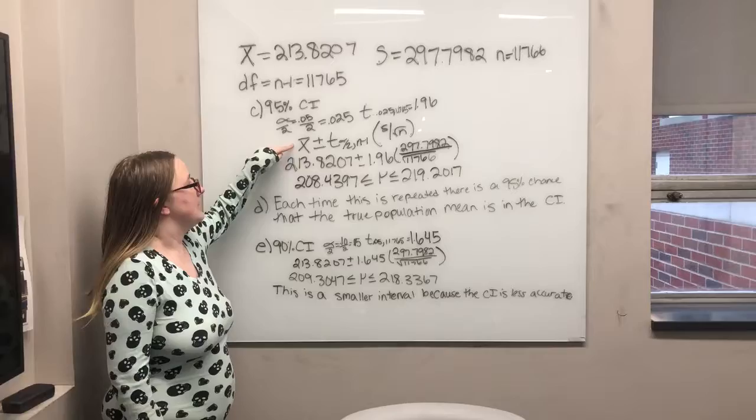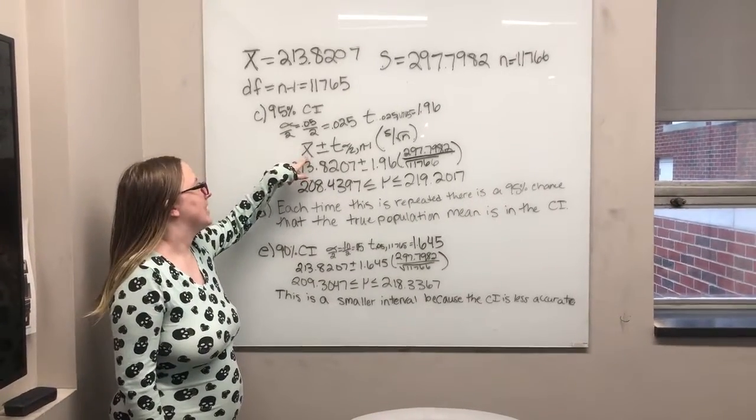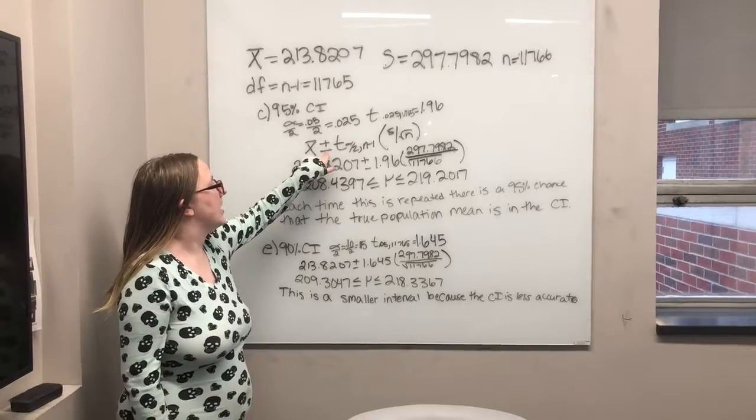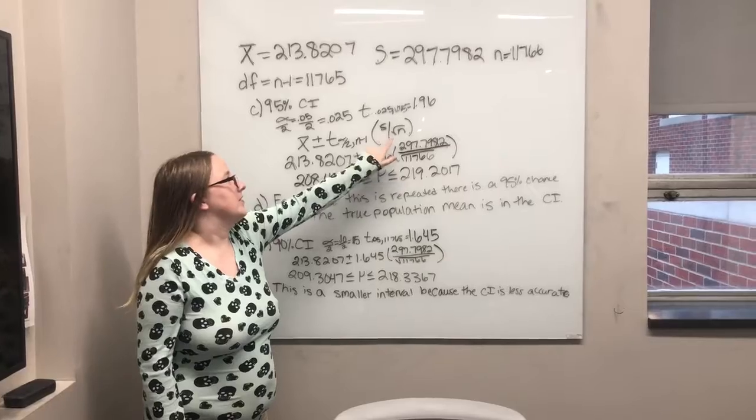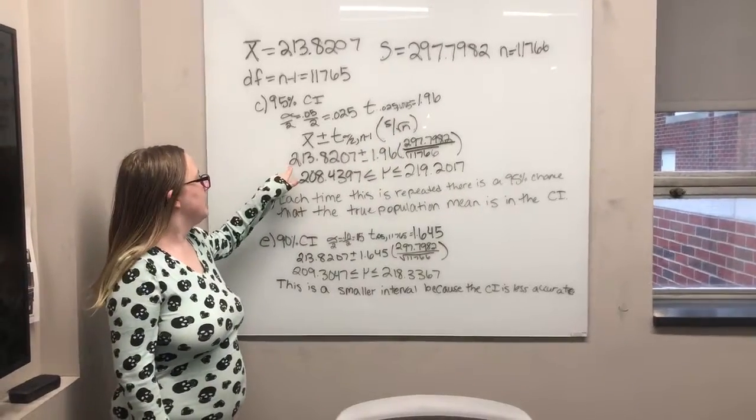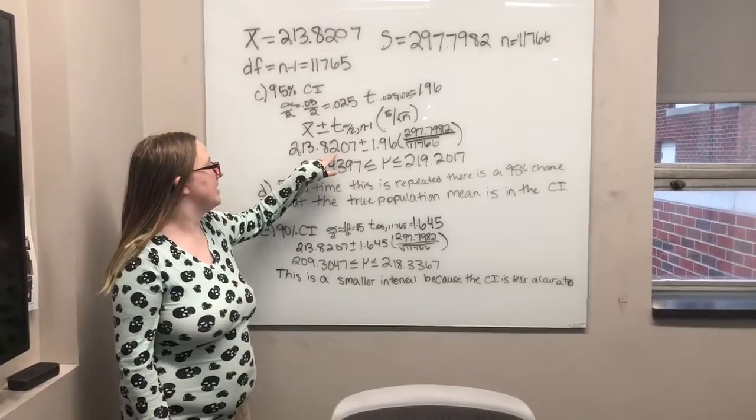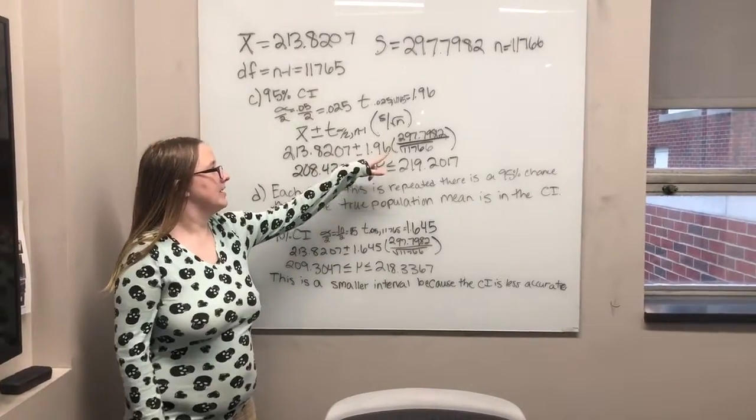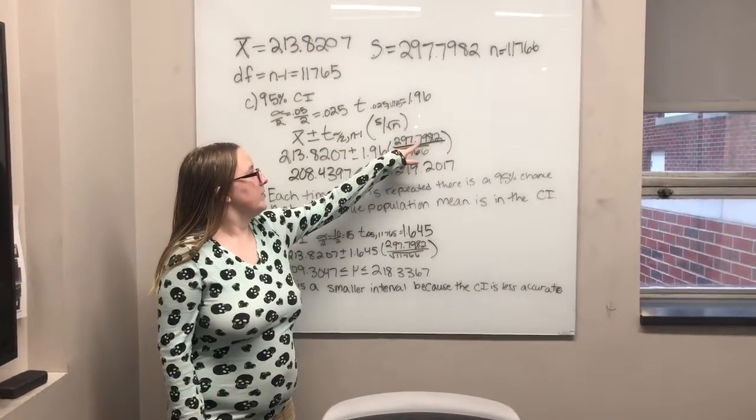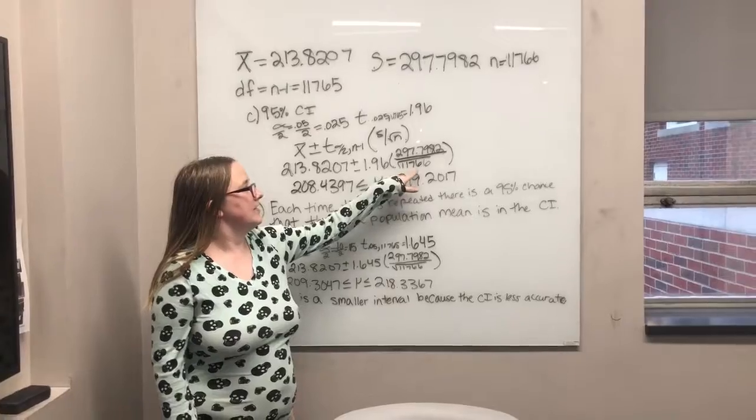And this is the formula for finding a confidence interval. You take x-bar and you add and subtract the t-value times the standard deviation divided by the square root of n. So this is just plugging in the numbers. So you have 213.8207 plus or minus 1.96 times 297.7982 divided by the square root of 11,766.